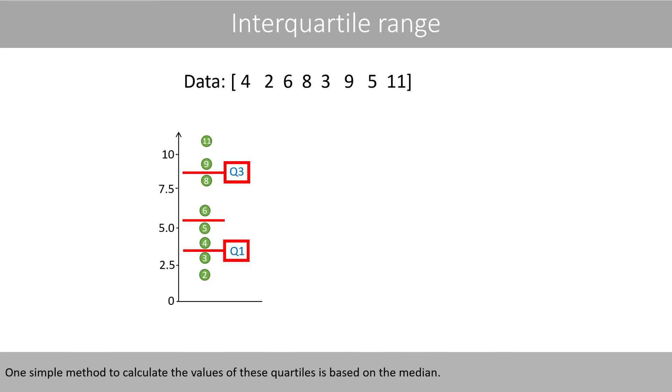One simple method to calculate the values of these quartiles is based on the median. We first begin to determine the value of the second quartile, which is equal to the median of all datapoints. Since we have an even number of values, the median is here the mean of the two values in the middle. Quartile 2 is therefore equal to 5.5.